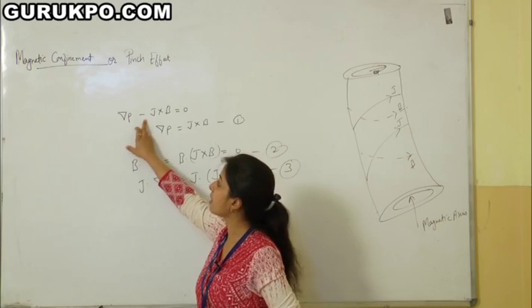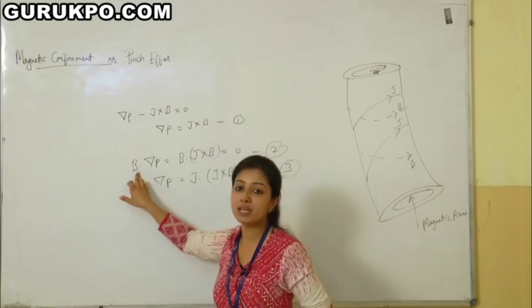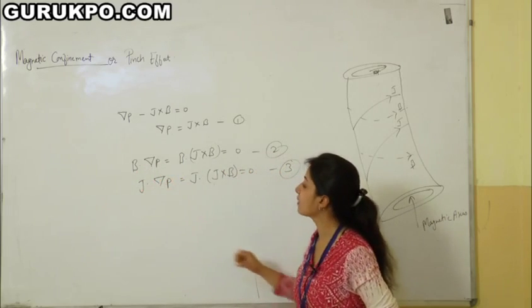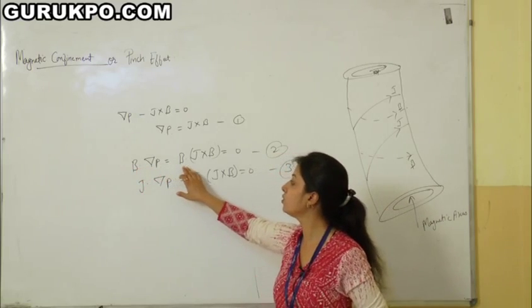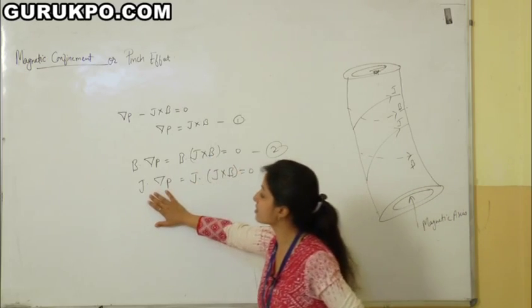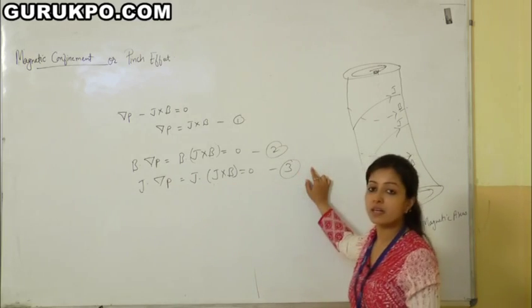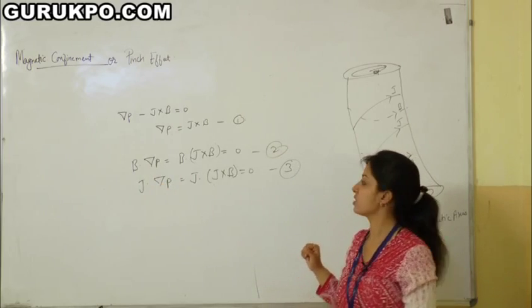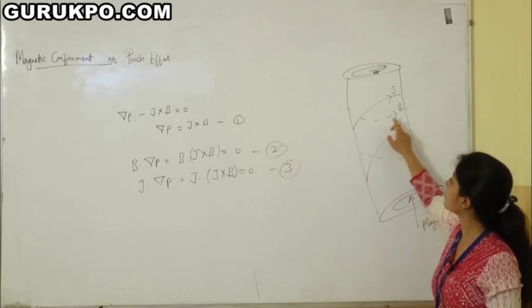At equilibrium, the force equation becomes gradient p equals j×B. Taking the scalar product of B with gradient p gives B·(gradient p) equals B·(j×B) equals 0, and taking the scalar product of j with gradient p gives j·(gradient p) equals j·(j×B) equals 0. These equations show that B and j are both perpendicular to the pressure gradient, meaning they lie on surfaces of constant pressure. If the surfaces are closed, the B-lines and j-lines do not cross each other.